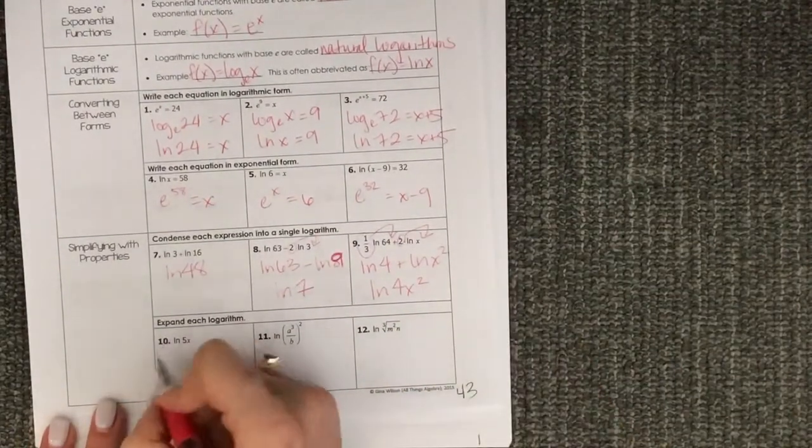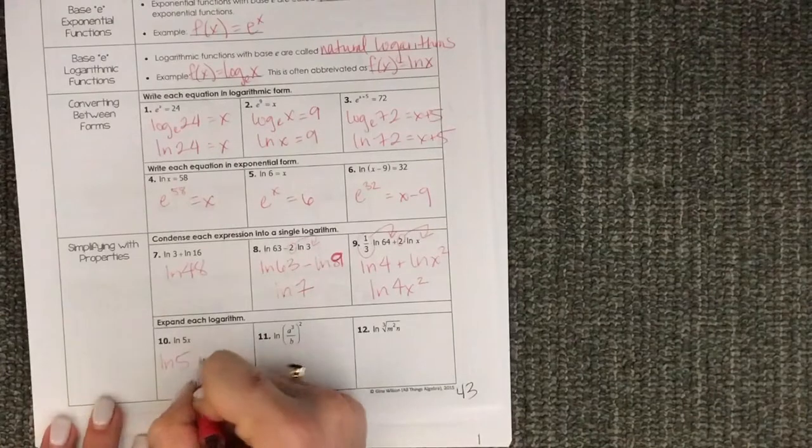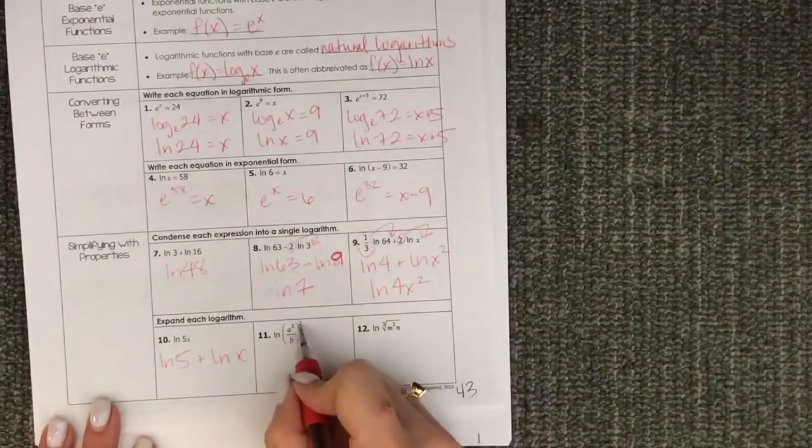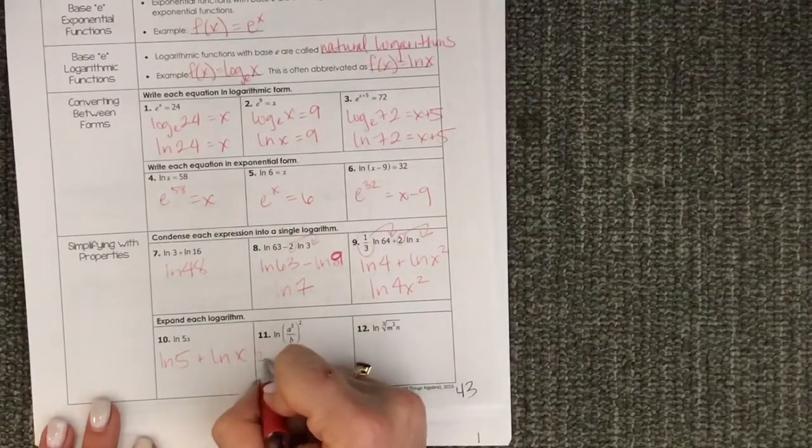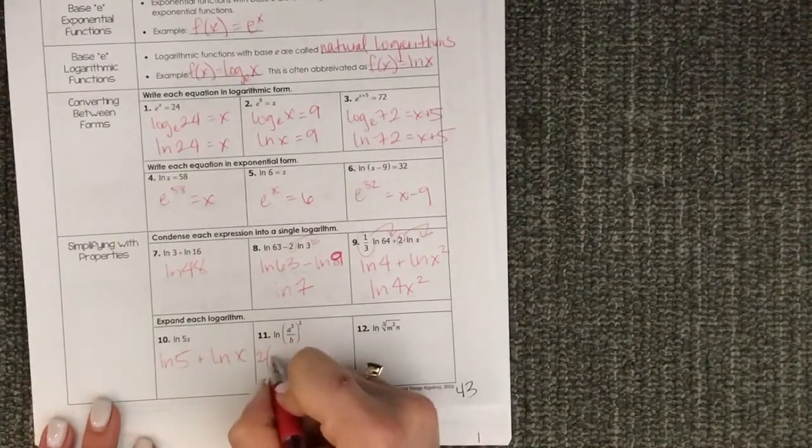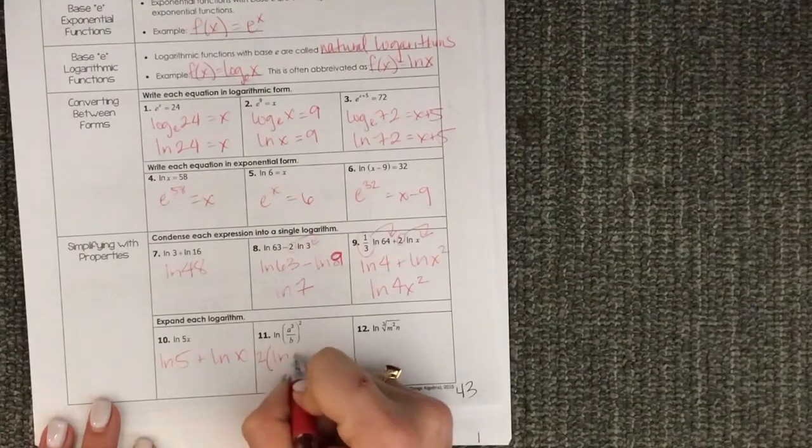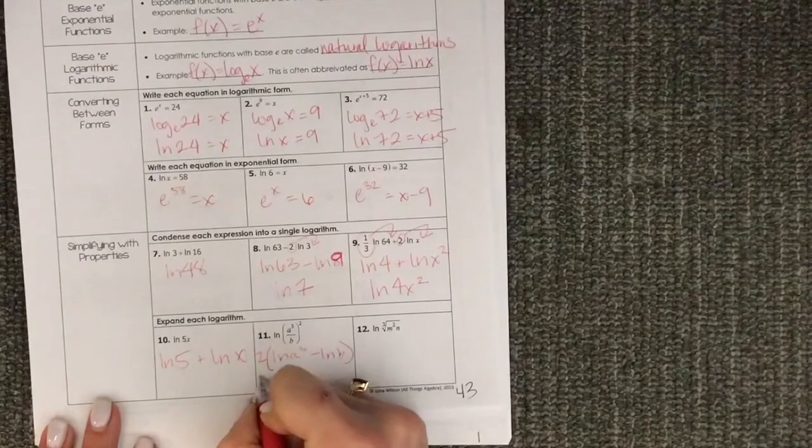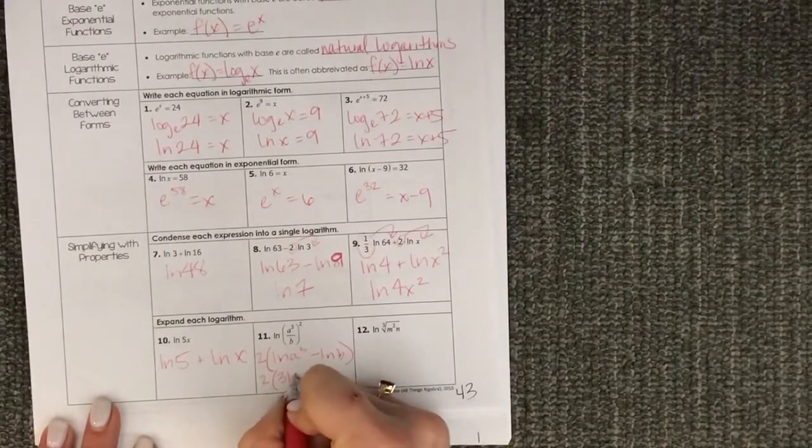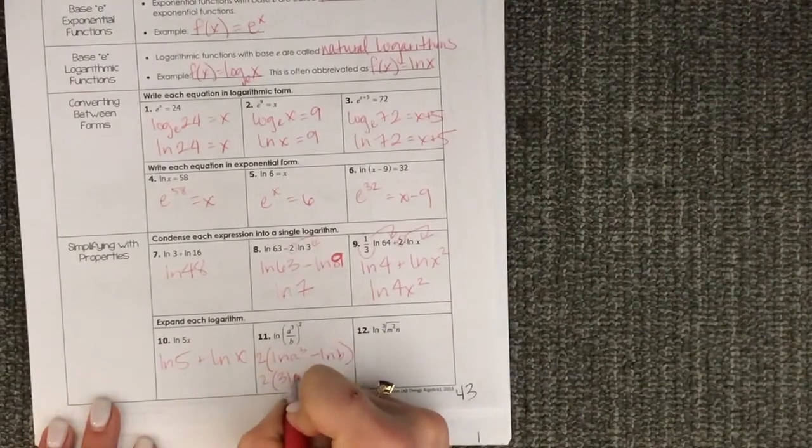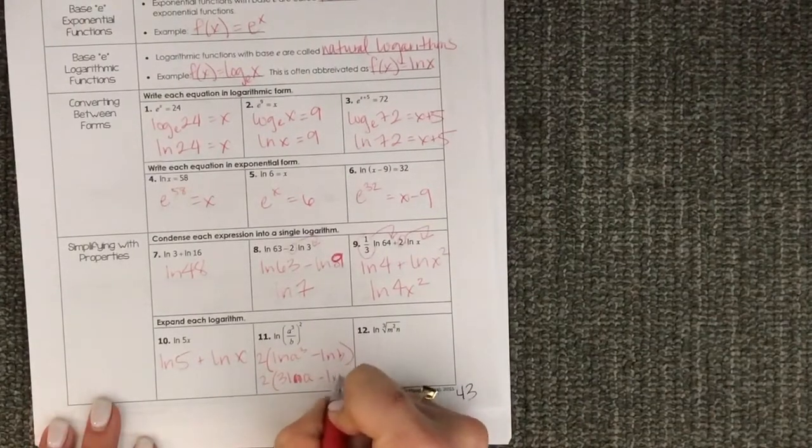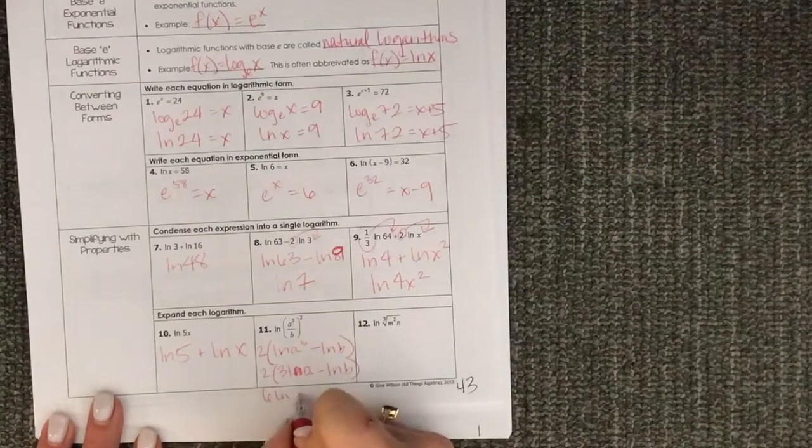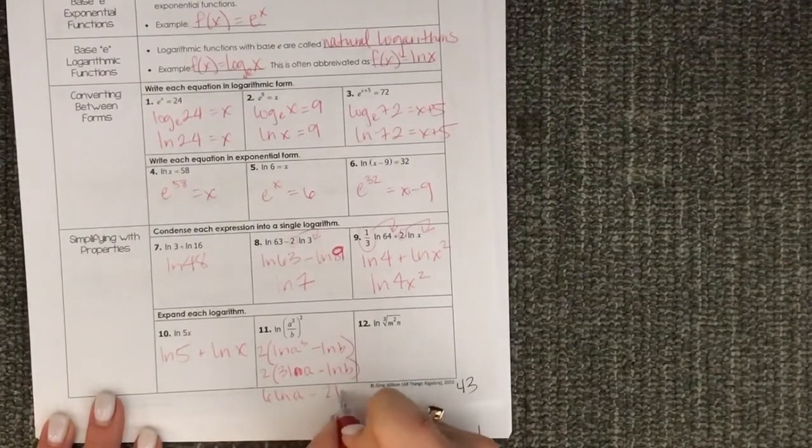And then expanding, again same rules. So it's really nothing different that we're doing here, we're just using a different base. Here we'd want to bring the 2 down first, so then we need big parentheses. And then this would be LN of A cubed minus LN of B. So then that'd be 2 times 3 LN of A minus LN of B. So then you could write that as 6 LN of A minus 2 LN of B.